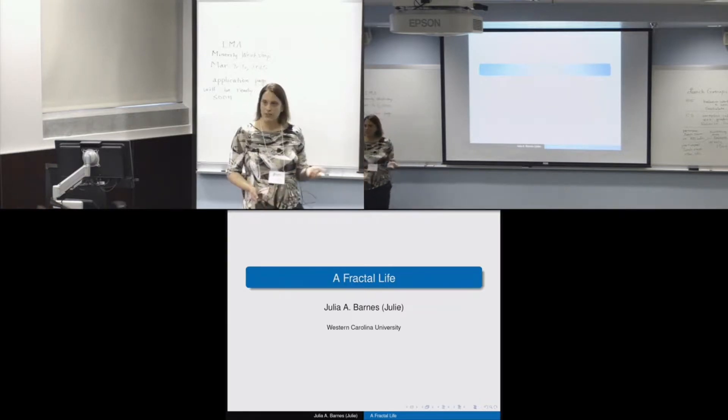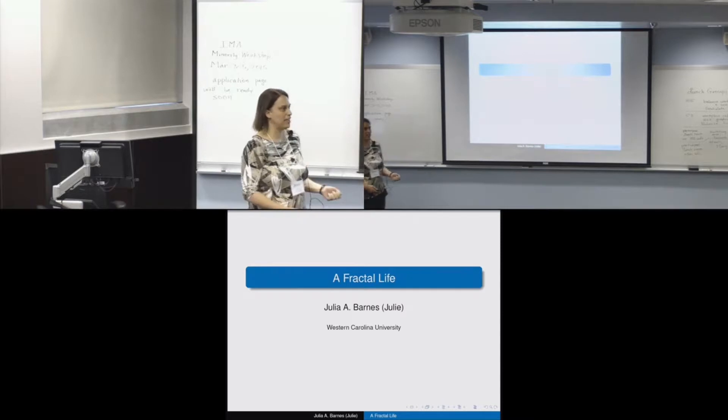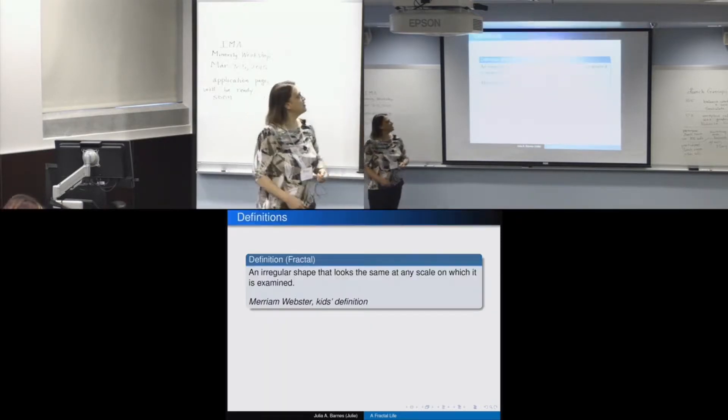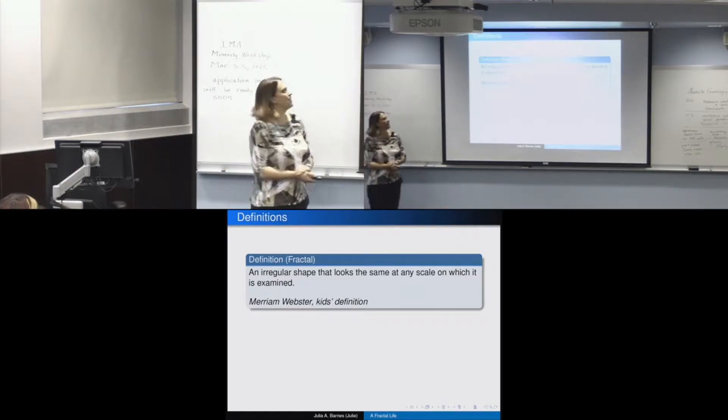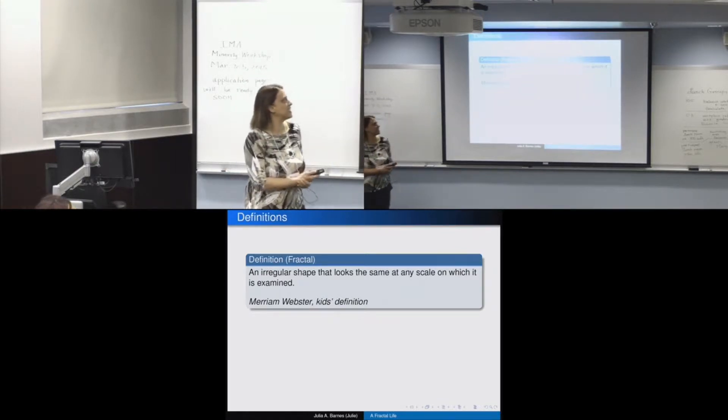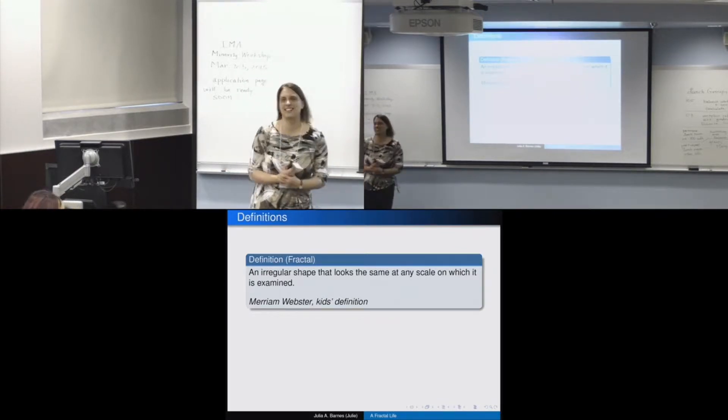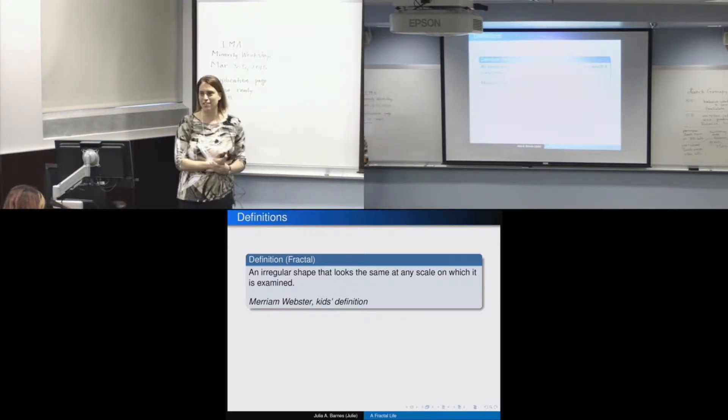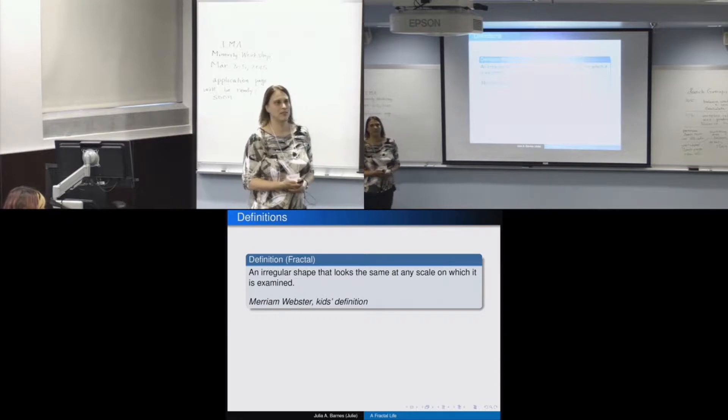So what I'm going to do today is, first off, we have a lot of mathematicians in the room, and so I needed to define the words in my title. First off, a fractal. A fractal is an irregular shape that looks the same on any scale at which it's examined. I'm not using a deep definition. This is the kid's definition out of Webster's, but that's applicable for the rest of this talk.